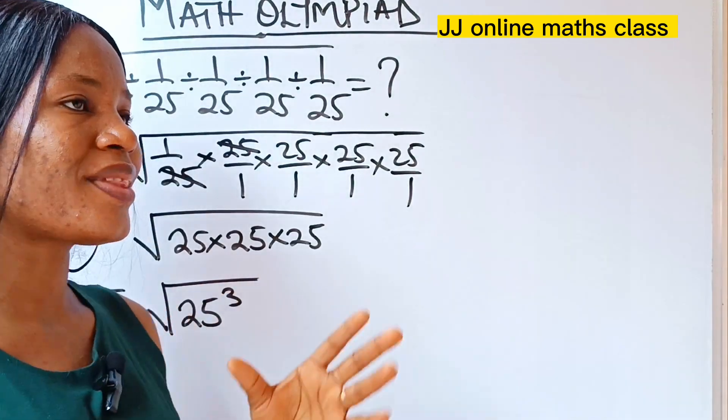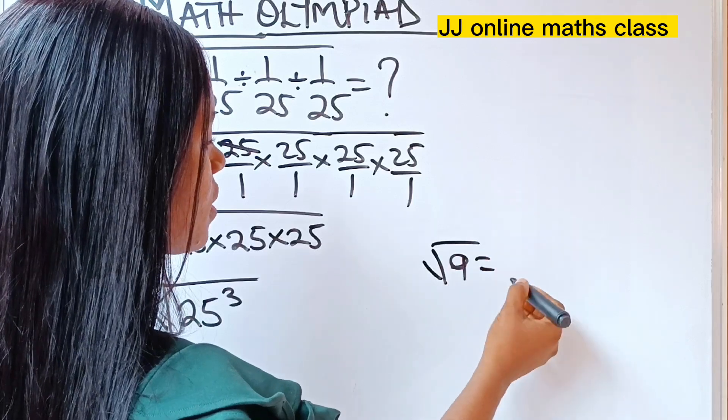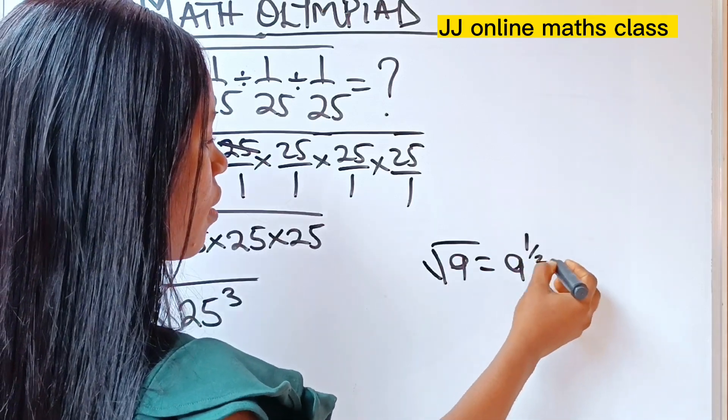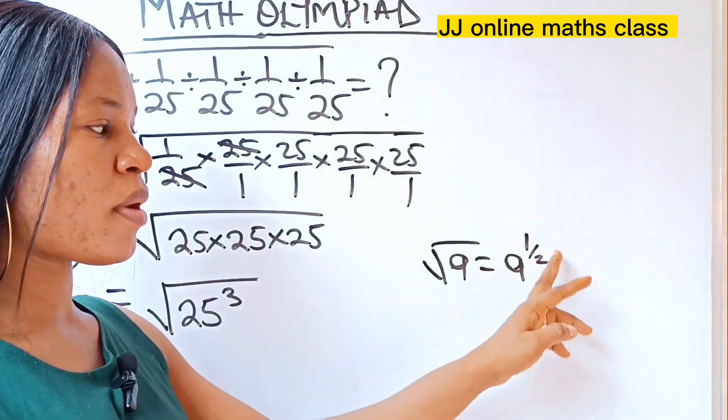Now, note and remember that in indices, square root of a is the same thing as a to the power of half. Square root of a is the same thing as a to the power of half.